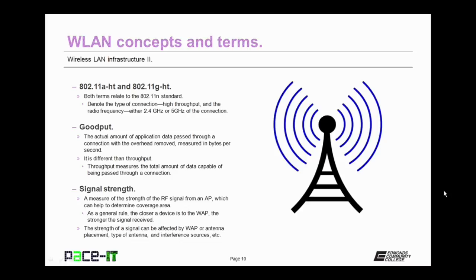Then we have signal strength. It's a measure of the strength of the radio frequency signal that comes from an access point, which can help to determine the amount of area that can be covered. As a general rule, the closer a device is to the wireless access point, the stronger the signal received. This strength of signal can be affected by access point or antenna placement, the type of antenna used, and interference sources that may be present.